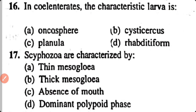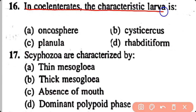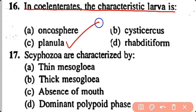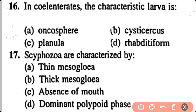Question number 16. In Cnidaria, the characteristic larva is: Onchosphere, Cysticercus, Planula, Rhabditiform. Correct answer is option C. Planula larva is present in Cnidaria.